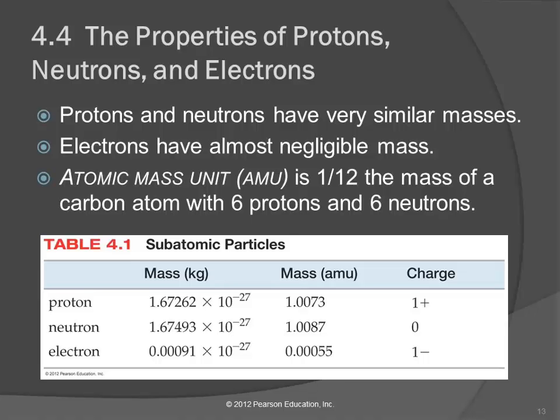So ballpark you can kind of think of it that way. So we see the mass of the proton is 1.0073 atomic mass units. The neutron is 1.0087. Really close. For most purposes, the same.